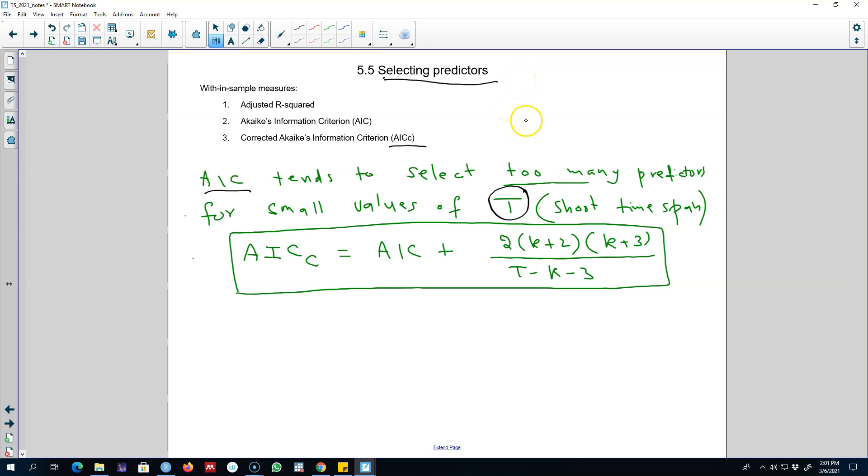But the original model may only contain three variables. So we probably need to correct our AIC so that we can take care of this problem.